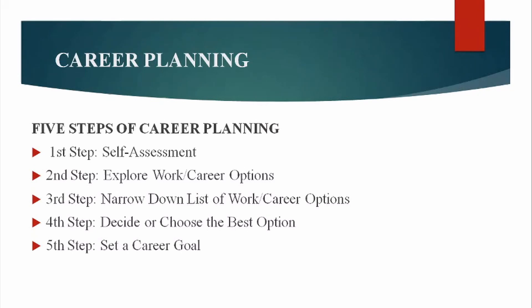The fourth step is to decide or choose the best option from the narrowed-down list of career options. The fifth and last step is to set a career goal. Once we choose the best option, we set our career goals. To summarize career planning: self-assessment, explore work or career options, narrow down the list, decide or choose the best option, and finally set a career goal.